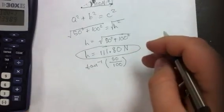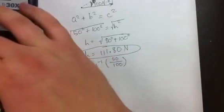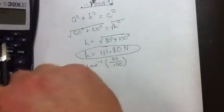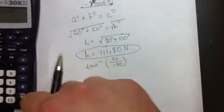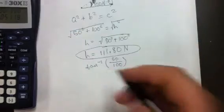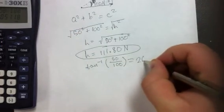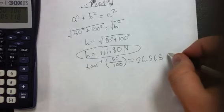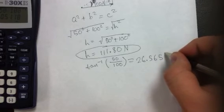So, inverse tangent of 50 over 100. So, on our calculator, we'll type inverse tangent of 50 over 100, and that will give us a value of 26.565 degrees.